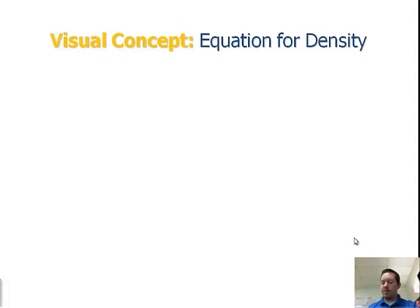Alright, so on the previous slide, we said the equation for density is d equals m divided by v, or mass divided by volume. Whenever you work out a problem with density, you can solve for the density, so you can solve for d, you can solve for m, or you can solve for v.